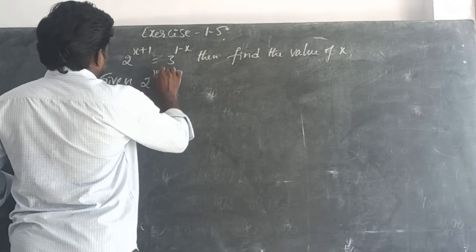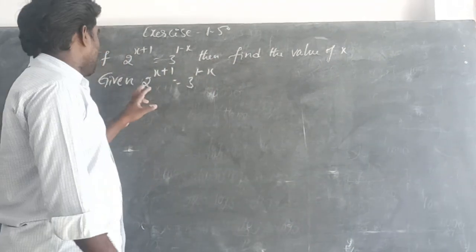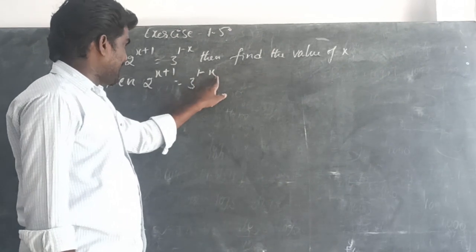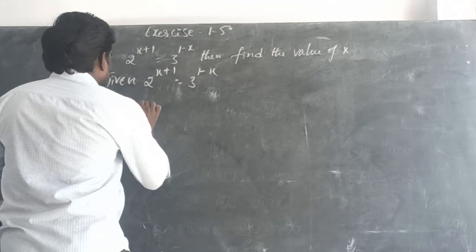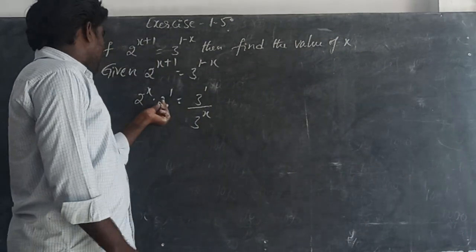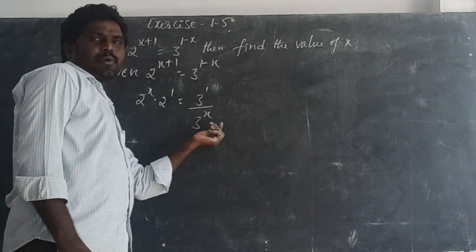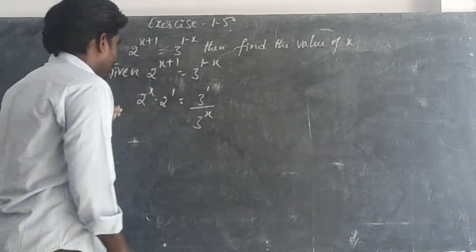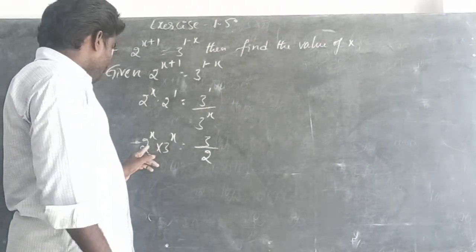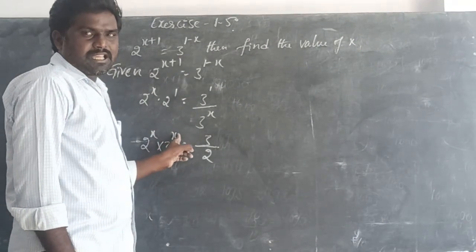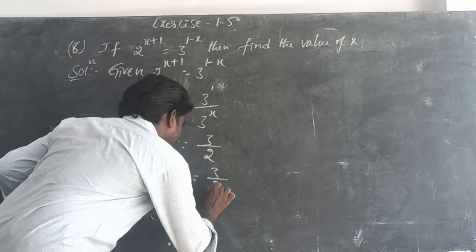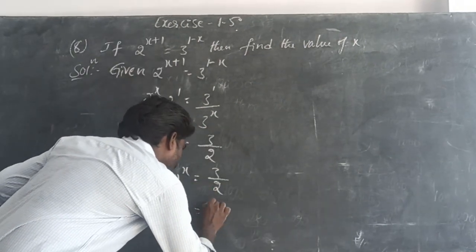We can solve this another way. Using the formulas a^(m+n) equals a^m times a^n, and a^(m-n) equals a^m by a^n: 2^x times 2^1 equals 3^1 by 3^x. Rearranging: 2^x times 3^x equals 3/2. Using a^m times b^m equals (ab)^m: 6^x equals 3/2.